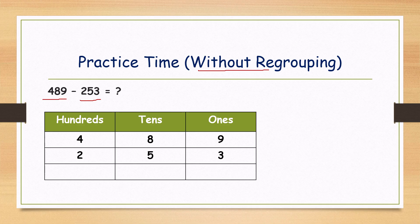In the ones place, what are the digits? Nine and three. On the top, what is the number? Nine is bigger than three, so we can do subtraction without borrowing. Keep it in your mind nine and open three fingers, going backward: nine before eight, eight before seven, seven before six. What is nine minus three? Six.